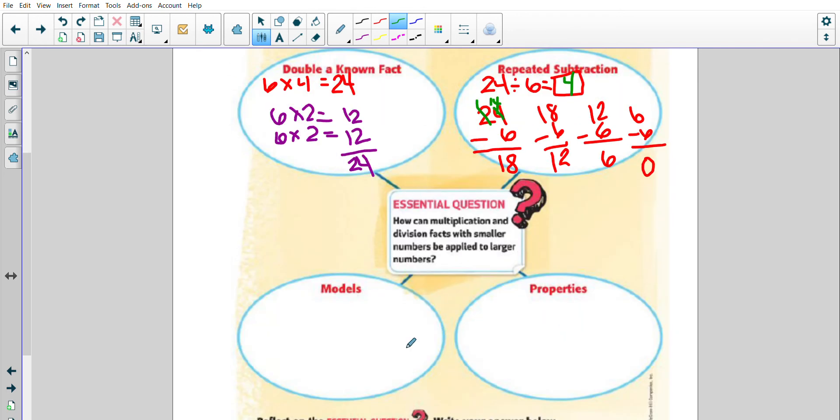Models, again drawing a picture. This could be an array, it could be equal groups, so it can be something as simple as sticking again with that 6×4. A model, we need 6 groups, one, two, three, four, five, six, putting four in each group. One, two, three, four. One, two, three, four. One, two, three, four. So it's four, five, six, seven, eight, nine, ten, eleven, twelve, thirteen, fourteen, fifteen, sixteen, seventeen, eighteen, nineteen, twenty, twenty-one, twenty-two, twenty-three, twenty-four.